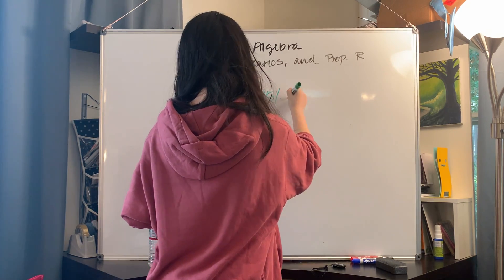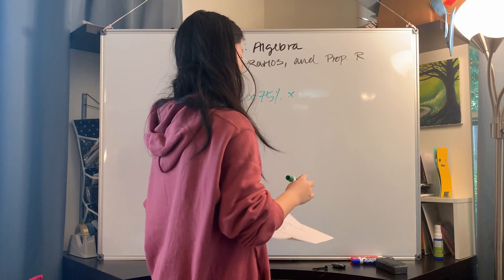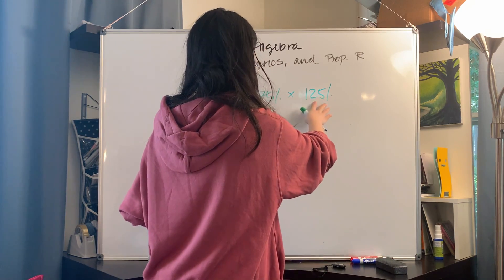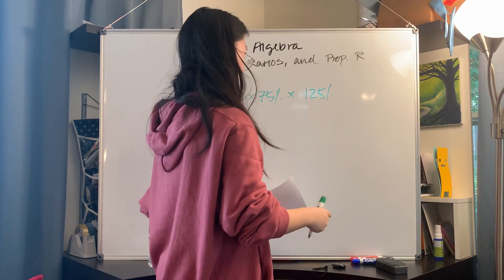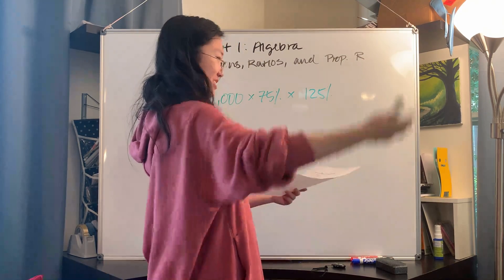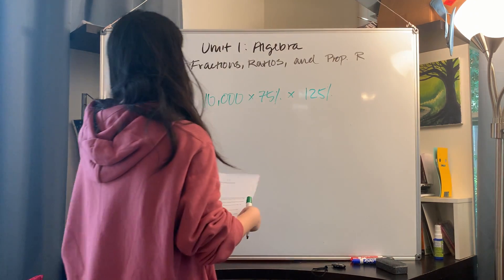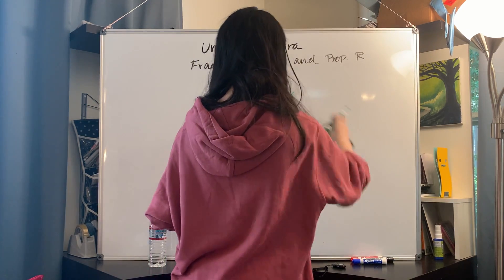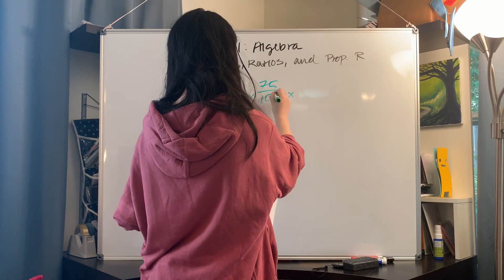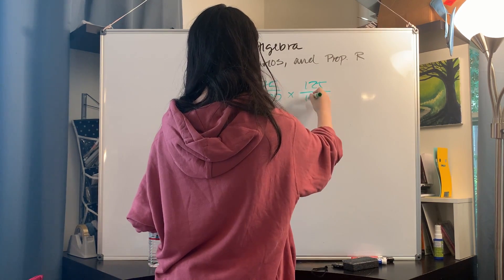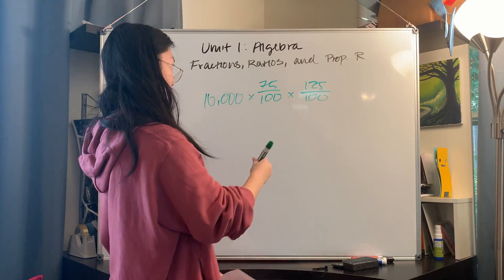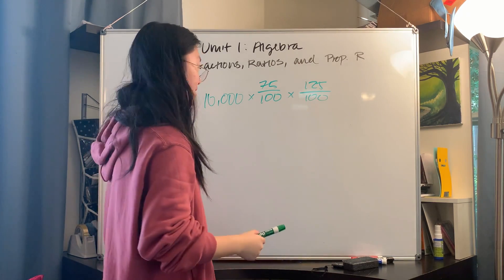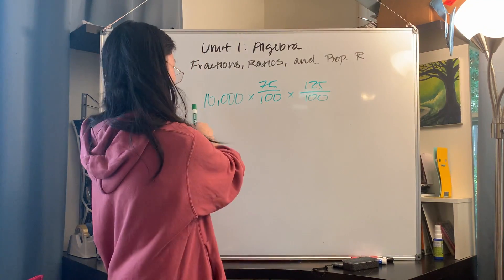Afterwards the price is increased by 25% again, so we multiply by 125% — 25% for the increase and 100% for the original price. What you might notice is that if you multiply 75/100 by 125/100, that does not equal 100/100 — it does not equal 1. The answer is not $10,000.